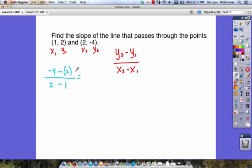Negative 4 minus 2 is negative 6 over 2 minus 1 is 1. So, we get negative 6 over 1, which is just equal to negative 6. There's our slope. Our slope, m, is equal to negative 6. We could have done this with a graph, but we don't always need it. Sometimes, we can just use this formula. The change in y, y2 minus y1, over the change in x, x2 minus x1, in order to find our slope.